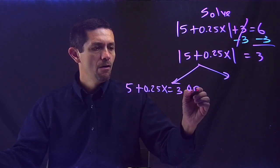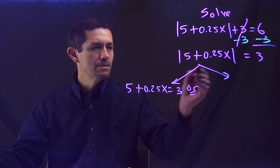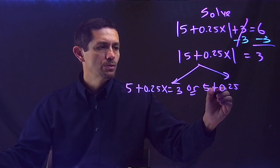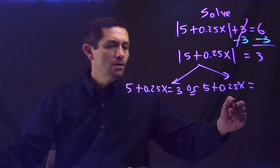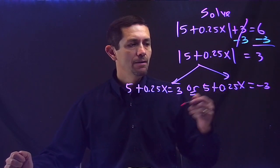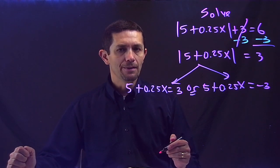Or the same thing on the inside, 5 plus 0.25x equals, here's the difference. One answer goes with positive, the other answer will be negative. So that's the main idea.